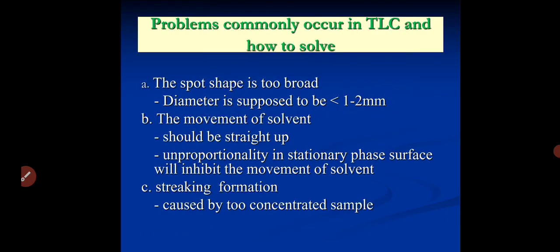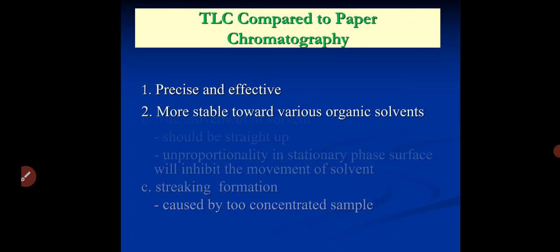Problems commonly used in TLC and how will we solve that? The spot shape is too broad, diameter is supposed to be 1 to 2 mm. The movement of solvent should be straight up. Unproportionality in stationary surface will inhibit the movement of solvent. Sticking formation caused by too concentrated samples. TLC compared to paper chromatography is more precise and effective and more stable towards various organic solvents.